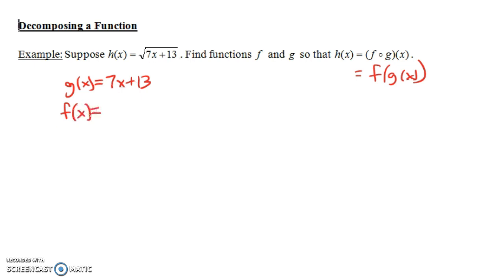Well, the way I think of finding the outside function is, if you think of the whole inside function as just one big x. So instead of 7x plus 13, you put one big x there. Then the f of x is what's left. It's the square root of just x. So these two functions, if you compose them, you should get the original function h of x.